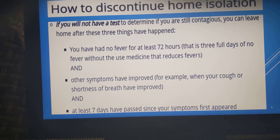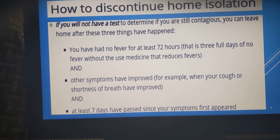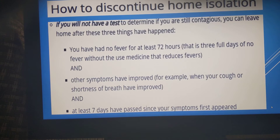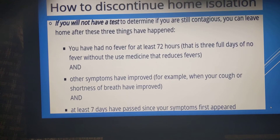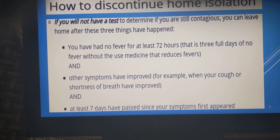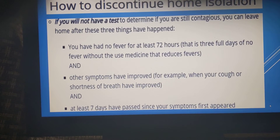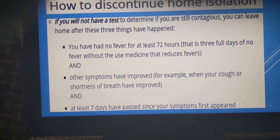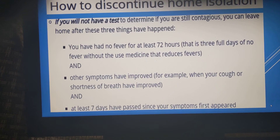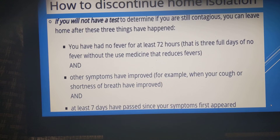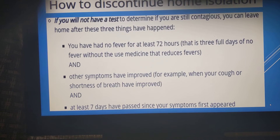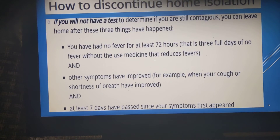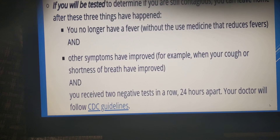Regarding how to discontinue home isolation: if you are in an area where testing is not readily available, three points are important. At least seven days must have passed since your symptoms first appeared. You must be free of fever for three days without using any medication. And your cough and shortness of breath must have reduced. If these three things are fulfilled, you can safely go out and discontinue home isolation.